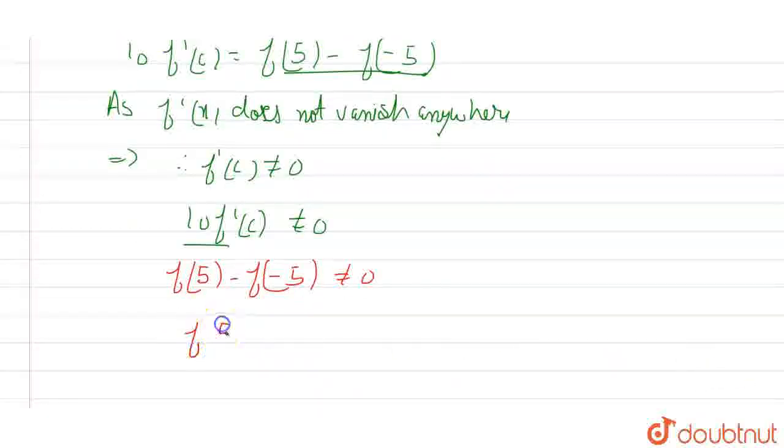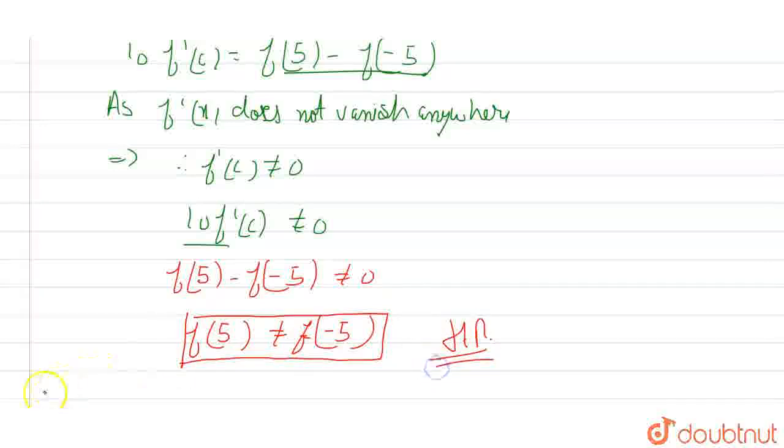So now we can write it down as f(5) should never be equal to f(-5). And I think this is what we have to prove in the question. So basically this is what we have to prove, hence proved.